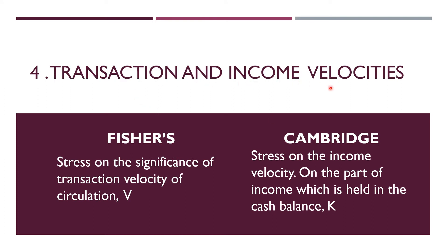The next point is transaction and income velocities. In Fisher's case, stress lies on the significance of transaction velocity of circulation, that is capital V — how much money is being spent on transactions of goods and services. In the Cambridge approach, the stress is on income velocity, specifically that part of income held in cash balance, denoted as capital K.